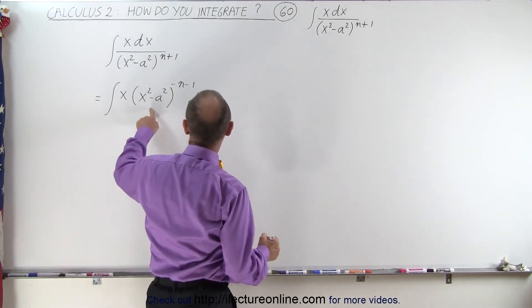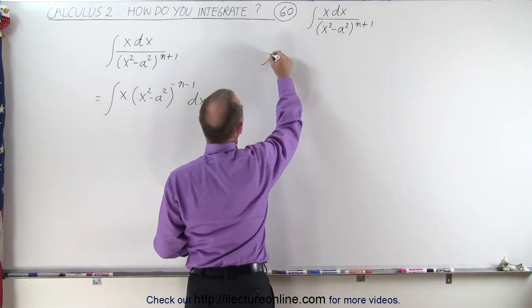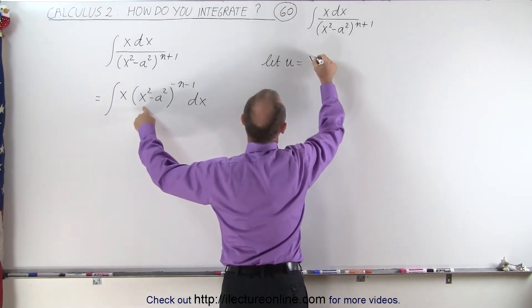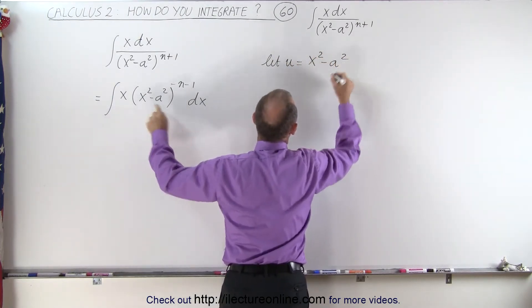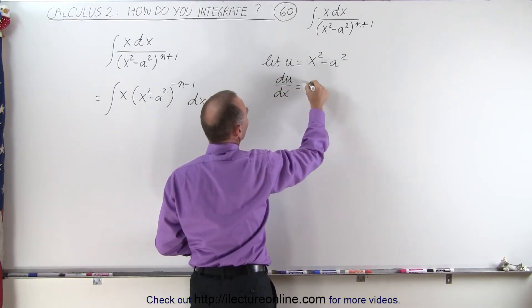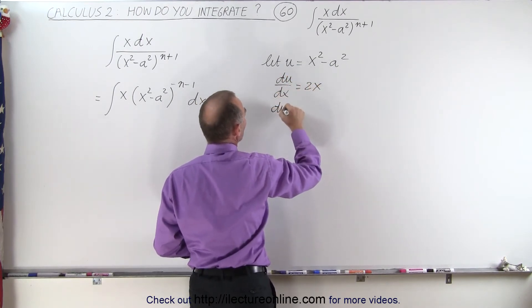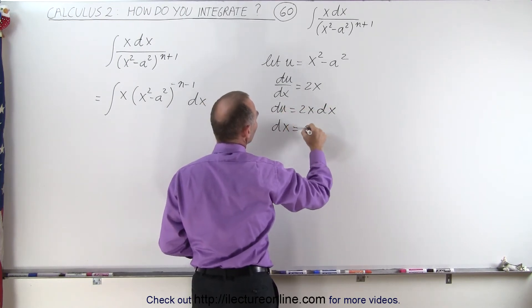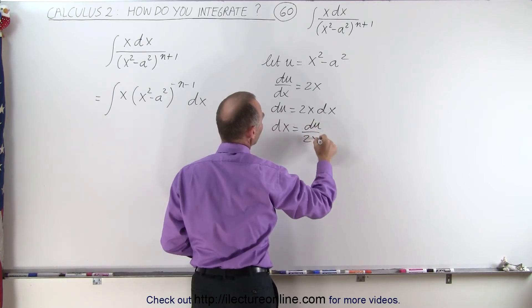So we can now use the method of substitution. We're going to let u equal what's inside the parentheses, which is x squared minus a squared, in such a way that du dx becomes equal to 2x, or du becomes equal to 2x dx, or dx becomes equal to du divided by 2x.